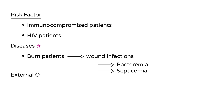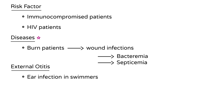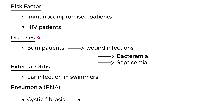A second condition caused by pseudomonas is external otitis, an ear infection that commonly occurs in swimmers. Another high-yield infection is pneumonia — particularly in two populations: patients with cystic fibrosis and patients on a ventilator, known as ventilator-associated pneumonia.